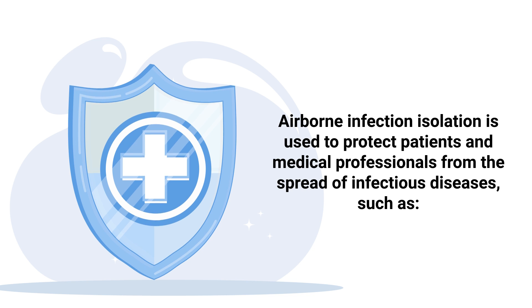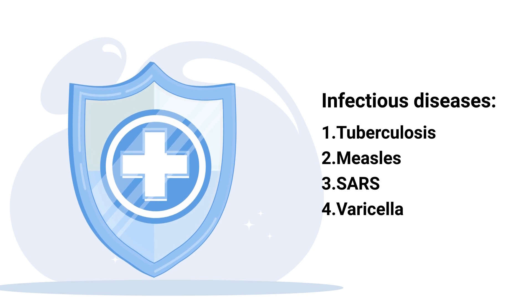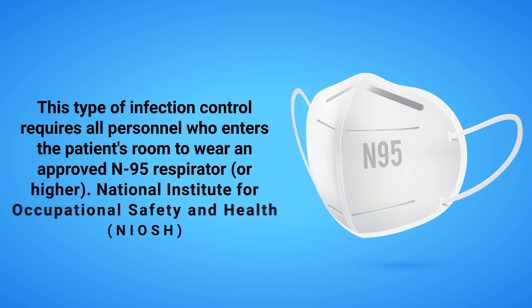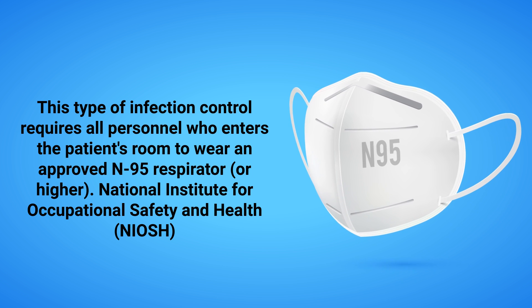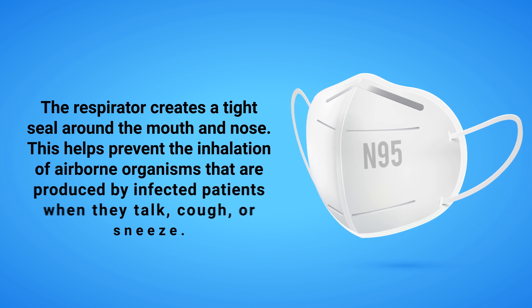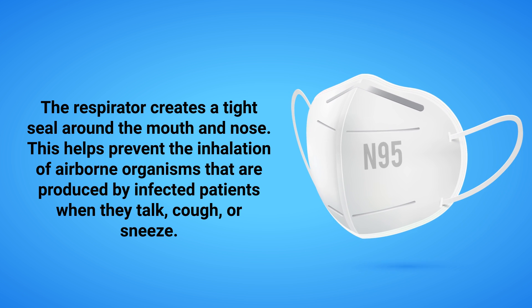Airborne infection isolation is used to protect patients and medical professionals from the spread of infectious diseases such as tuberculosis, measles, SARS, and varicella, more commonly known as chickenpox. This type of infection control requires all personnel who enter the patient's room to wear an approved N95 respirator or higher, approved by the National Institute for Occupational Safety and Health. The respirator creates a tight seal around the mouth and nose, helping prevent inhalation of airborne organisms.